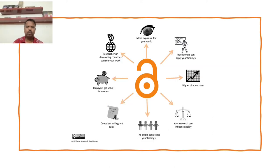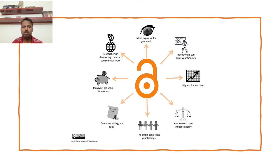Let's see why open access matters. First and foremost, as a researcher, we get more visibility for our work. Because of that visibility, we get more citations, since everybody has access and will read and cite our work. Also, because our research is publicly funded, publicly funded research should be publicly available, which can also help in policy formulation.